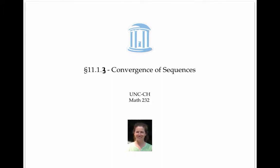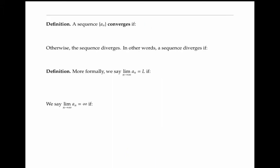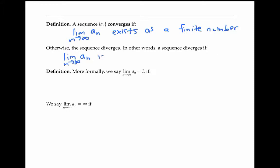This video gives some tricks for deciding whether a sequence converges. We say that a sequence a_n converges if the limit as n goes to infinity of the terms a_n exists as a finite number. Otherwise, we say the sequence diverges. In other words, a sequence diverges if the limit is infinity, negative infinity, or does not exist.